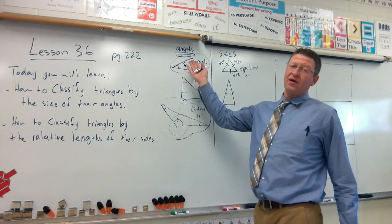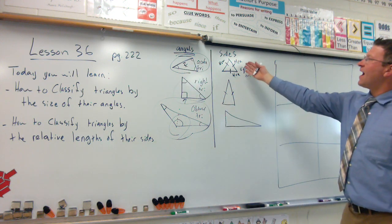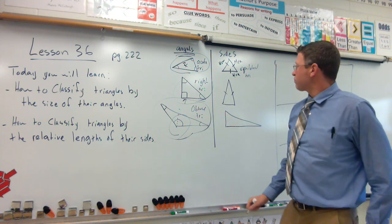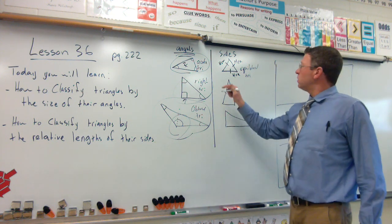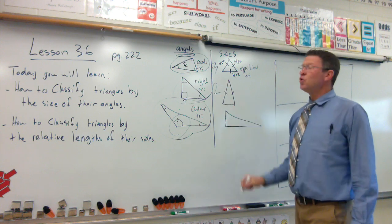Three sides the same. Kind of like the acute, three angles the same. Three sides the same. Equilateral triangle when we're talking about sides. Now, if you have two, this would be three sides the same. Two sides the same. This would be an isosceles.